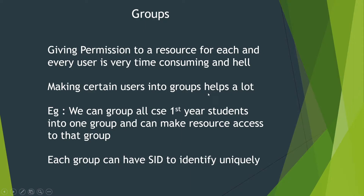Making certain users into groups helps a lot. We can group all CSC first year students — it may contain 200 students — into one group, and give resource access to that group. So there is a file like a textbook PDF, and instead of adding 200 users to the file permission, you group all CSC first year students and add that group name to the file permission. All students get read access. This is what we call a group.